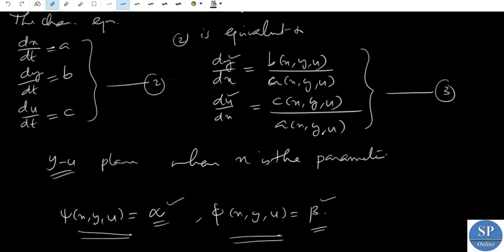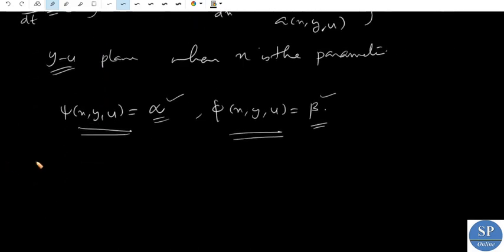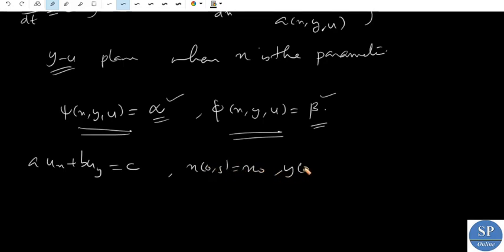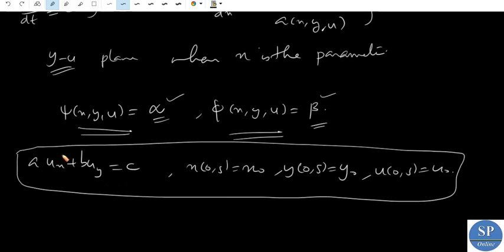Now recall that the solution surface of the given PDE (1) passing through an initial curve is obtained from a one-parameter family of curves solving the characteristic equations. We have PDE (1): A u_x + B u_y = C, along with initial conditions x(0,s) = x₀, y(0,s) = y₀, u(0,s) = u₀. The solution surface of this PDE with this condition is obtained from a one-parameter family of solutions.